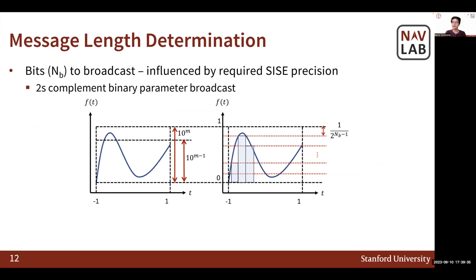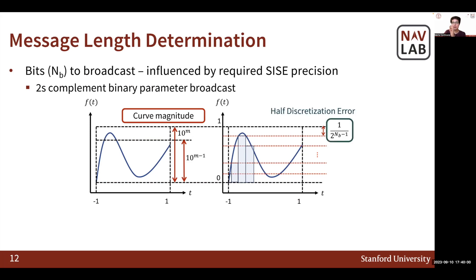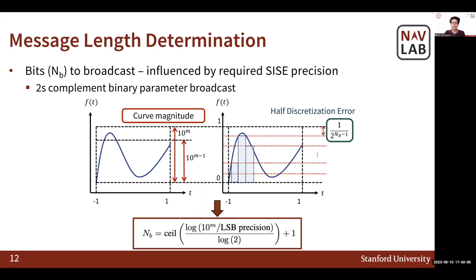I would like to briefly touch on how message length is determined in this work. The number of bits broadcasted for the ephemeris portion of the navigation message is directly influenced by the required signal-in-space error position. A signal-in-space error sets the precision of the least significant bit. The leftover discretization error can be rewritten in terms of least significant bit precision and the curve magnitude to ensure that every possible integer digit of a parameter is captured at the required precision. We do so in a two's complement binary parameter representation.